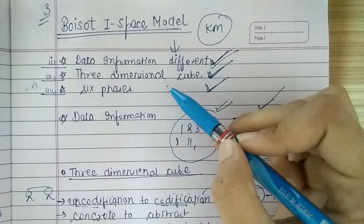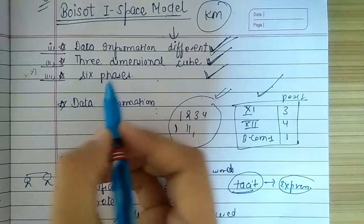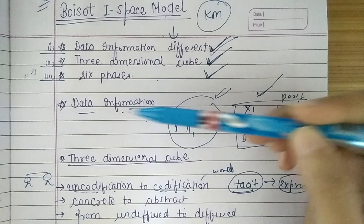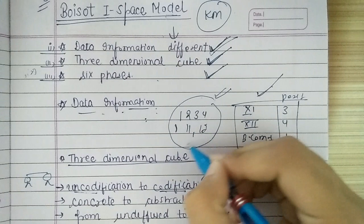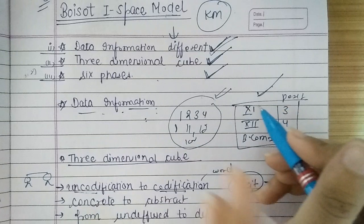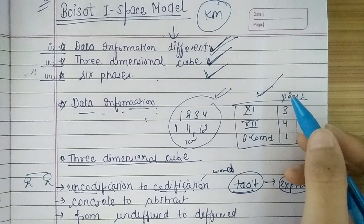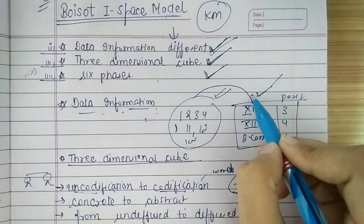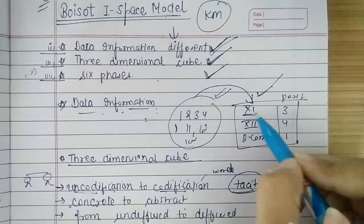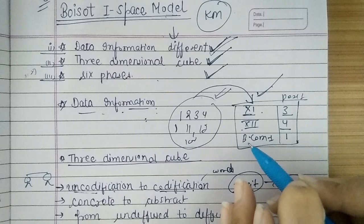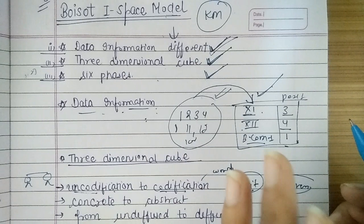The first thing this model discusses is data and information. This model says that data and information are different. Data is like you have written something: 1, 2, 3, 4, 12, 11, 10, 100 — anything. That is data. But if you present that data in a proper, structured way, in table form, it becomes information. When data is presented in a structured way, it becomes information. For example, if you present it as: 11th class has three position holders, 12th class has four position holders, B.com has one position holder — that is information. So data and information are different, and this model discusses this.